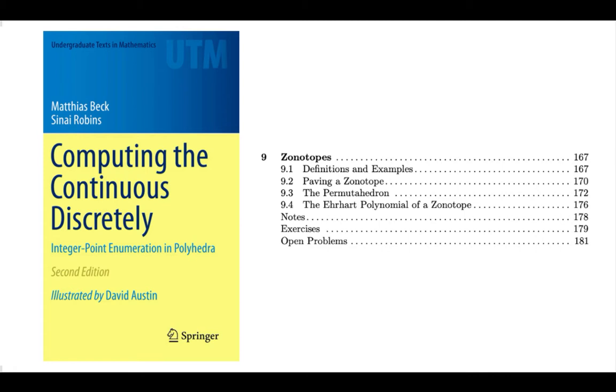We will give a formula for the Ehrhart polynomial of a zonotope and make some brief remarks about connections to hyperplane arrangements.